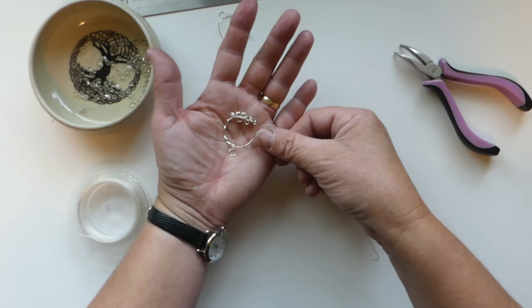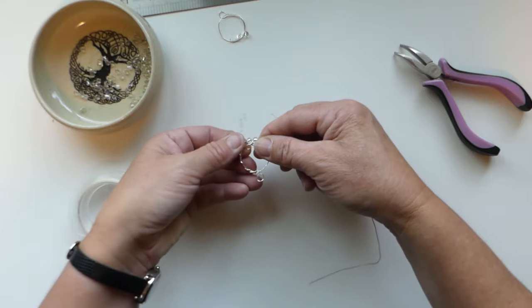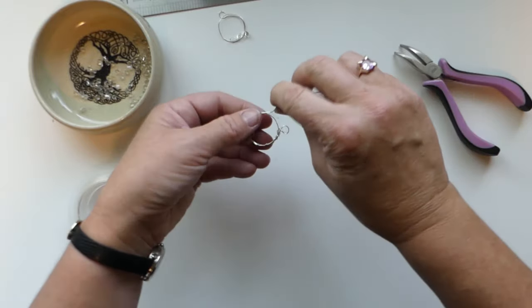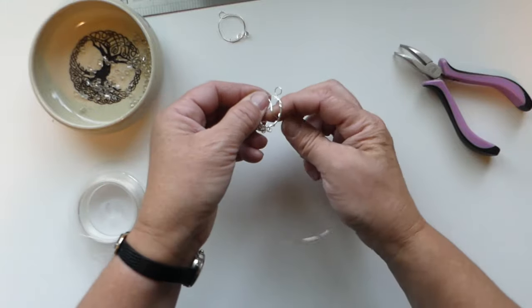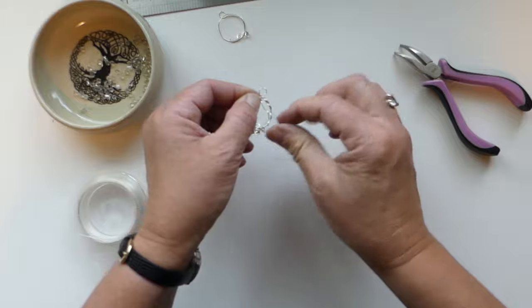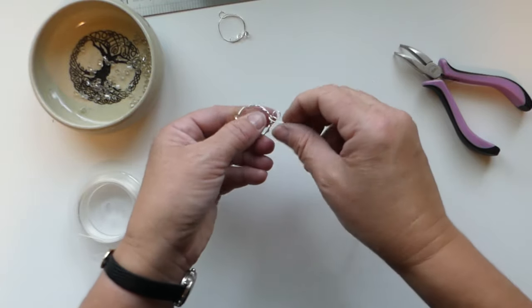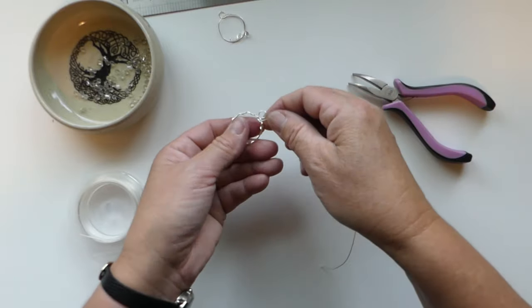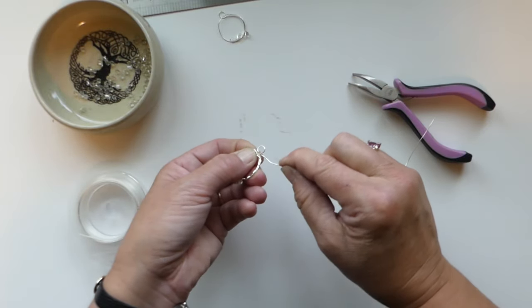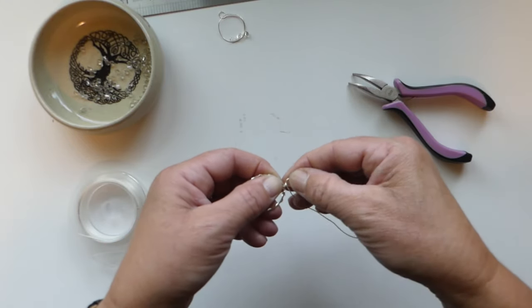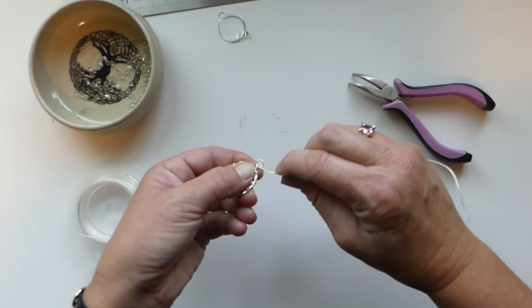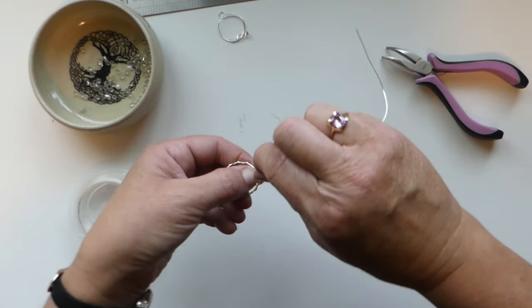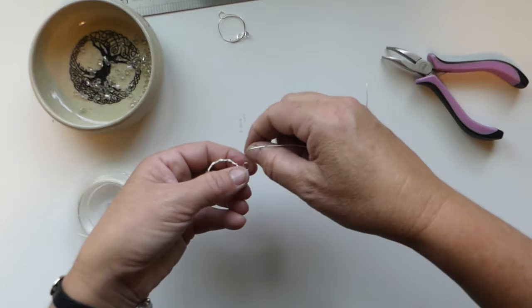The beads on the bottom, and then we're going to continue to wrap this to the top. And now we've come back to the top where our bail is, and you know I'm just going to give that just a little bit of a squeeze here. And then we're going to wrap our wire around the bail, capturing the whole thing in this wrap. A little bit of slippage there.